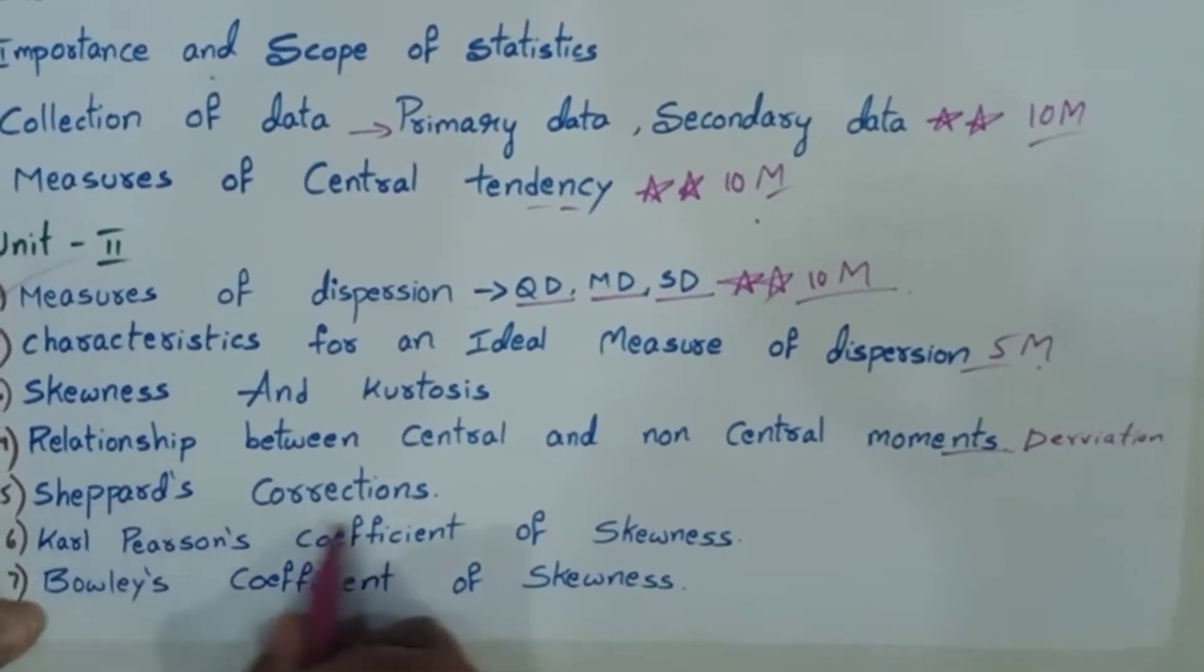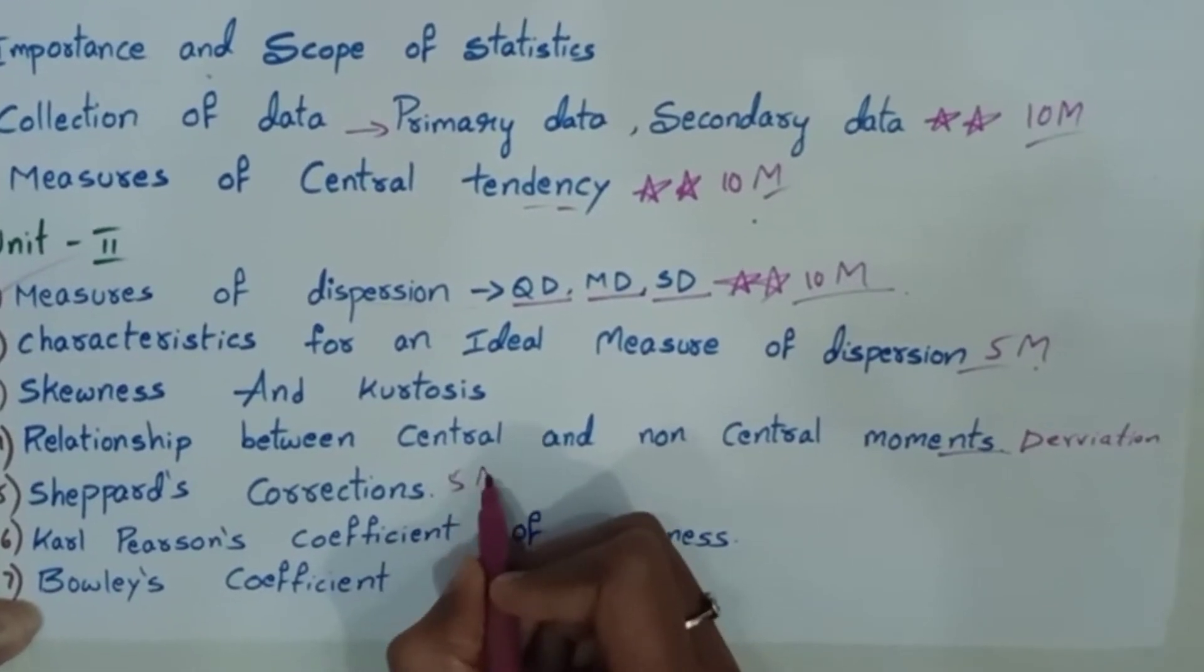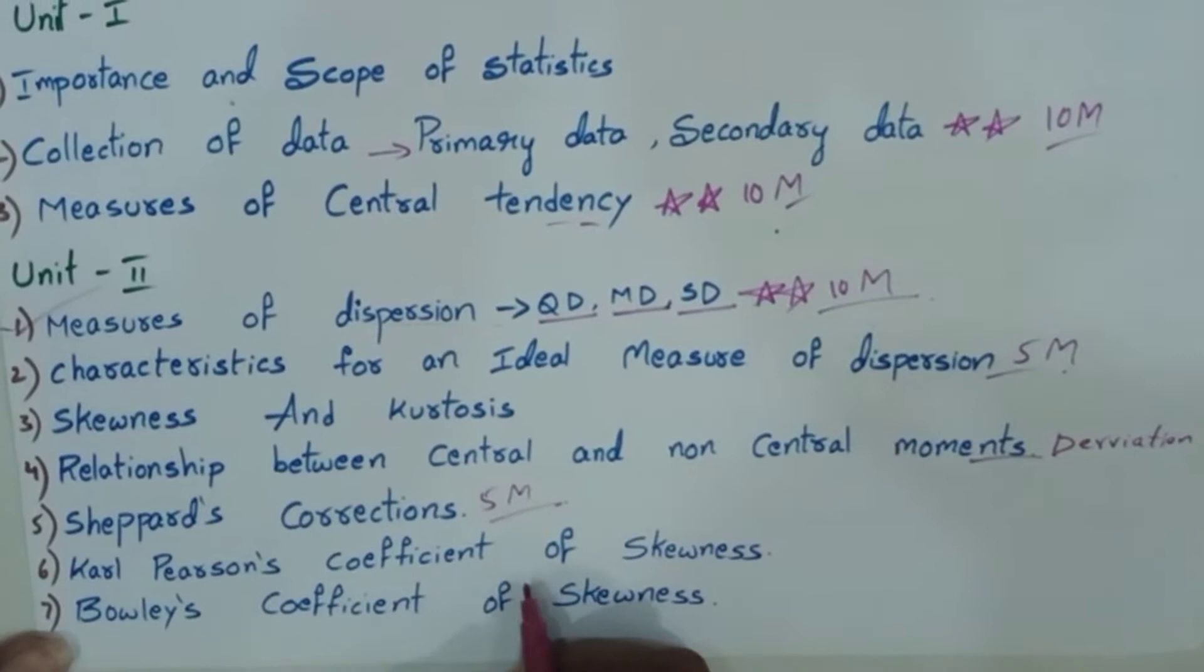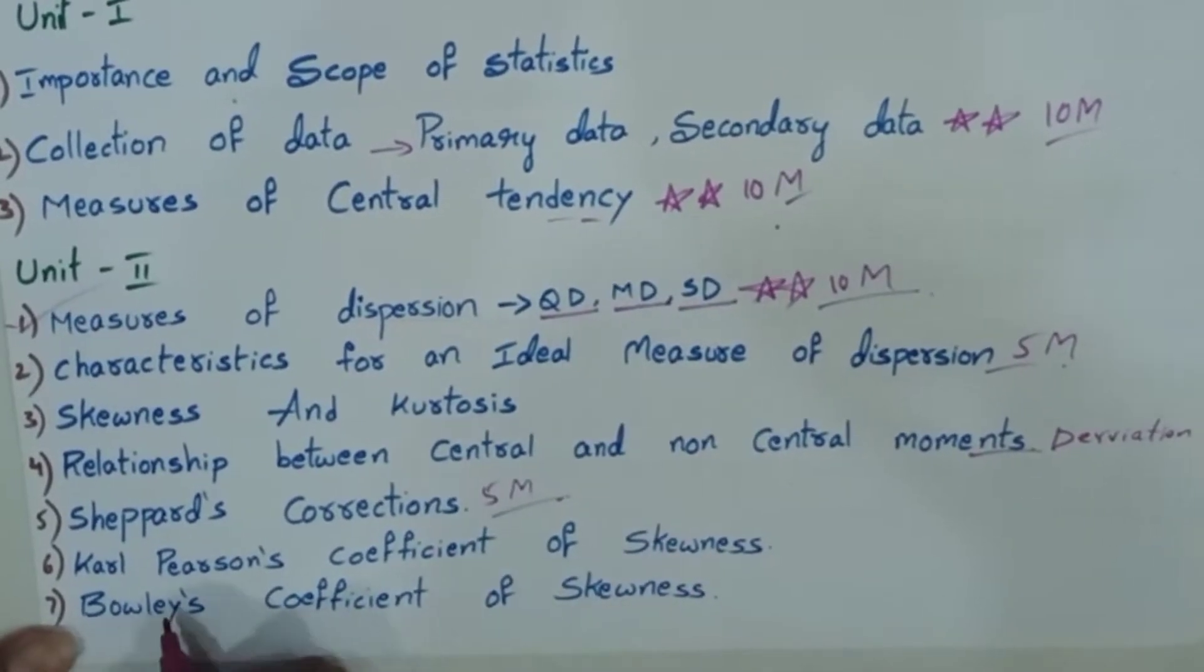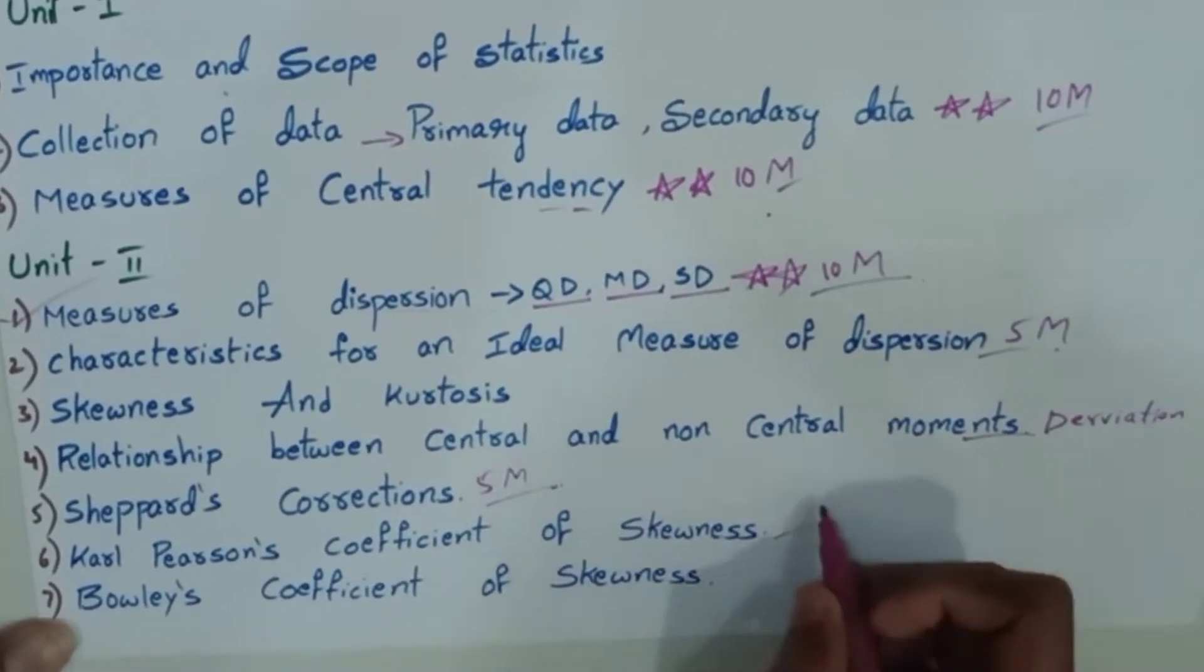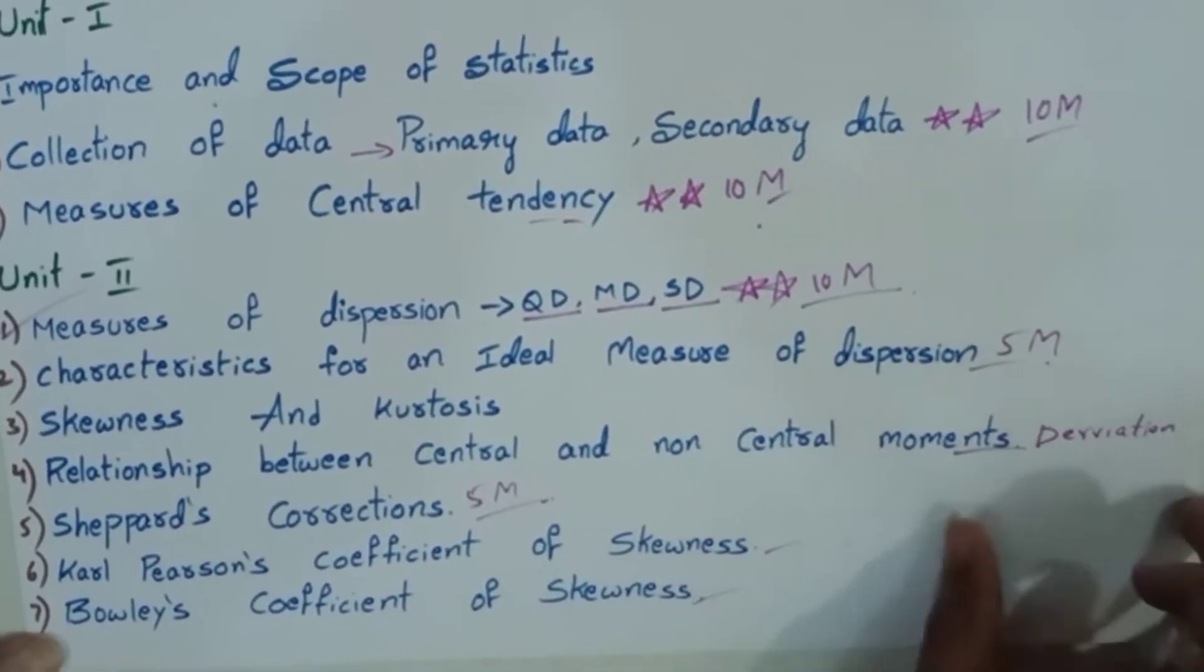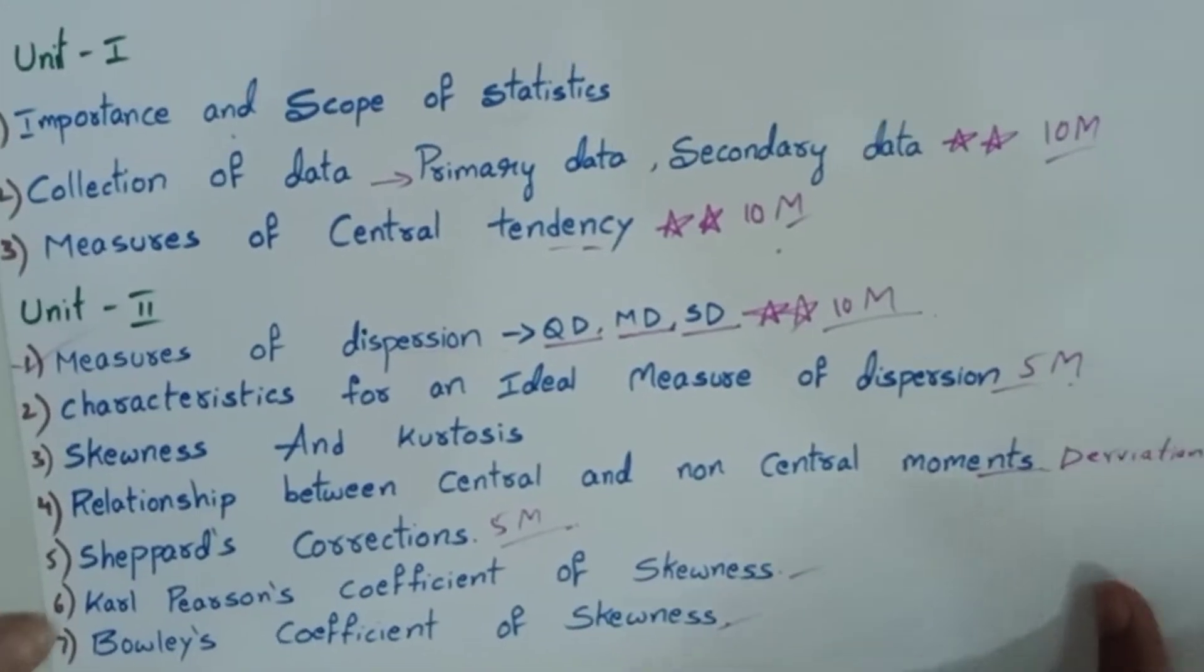Next, Sheppard's correction. It is 5 marks important. Next, Karl Pearson's coefficient of skewness. It is 10 marks or 5 marks. This is an important part. Next, Bowley's coefficient of skewness. It is 10 marks or 5 marks.